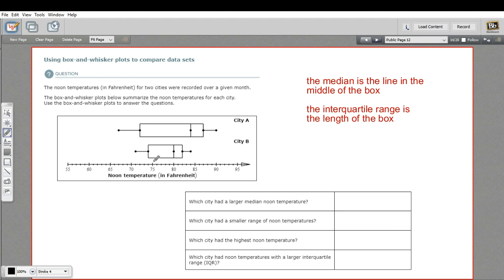There's one other thing that we have when we have a box and whisker plot, and that's called an interquartile range. That's the length of the box part. So you've got the first, the second, the third, and the fourth quartile. The second and third quartile, that range, that's called the interquartile range.